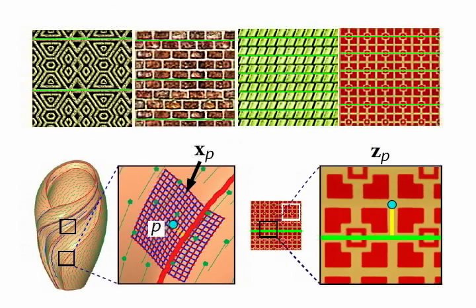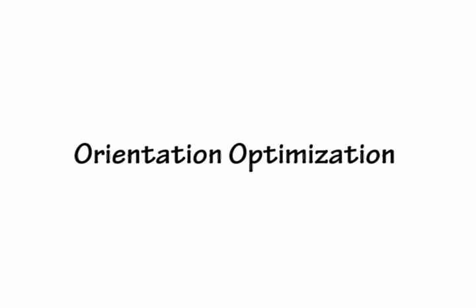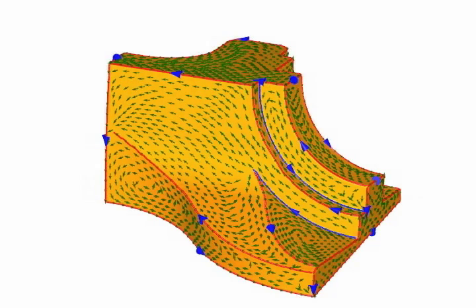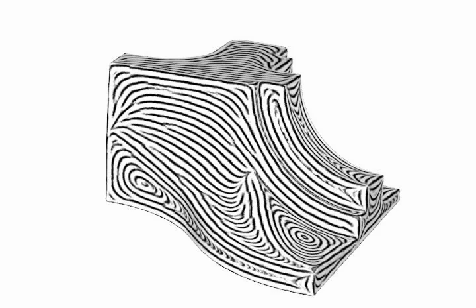We call this Feature Align Shape Texturing. To obtain a smooth vector field with small distortion and reduced singularities for quality texture synthesis, properly orienting the tangent vectors along the feature curves is essential.